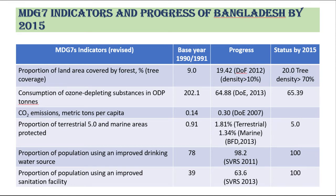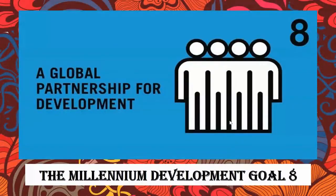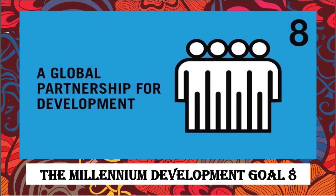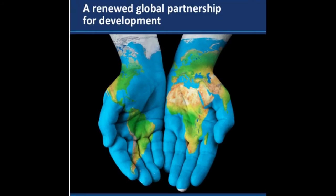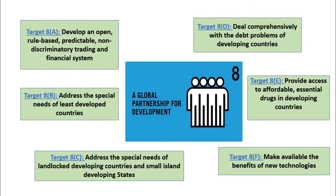Now we are talking about the last Millennium Development Goal 8, which is regarding developing a global partnership for development. The targets most relevant to the special needs of least developed countries, landlocked countries, and small island developing states address debt and the needs of specific countries from a global partnership context. MDG 8 has six targets: develop a rule-based, predictable, non-discriminatory trading and financial system; address the special needs of least developed countries; address the special needs of landlocked developing countries and small island developing countries; and deal comprehensively with the debt problems of developing countries.